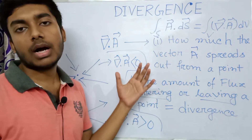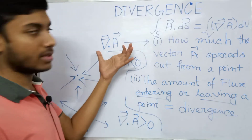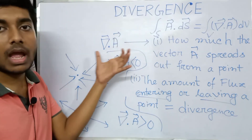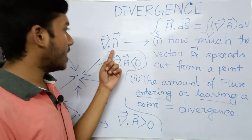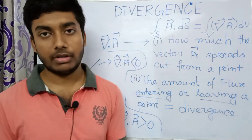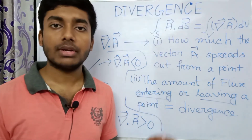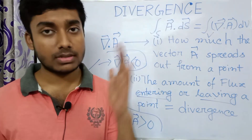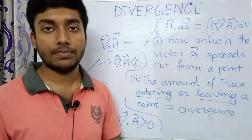Now I will make some mathematical calculations to understand the significance of del dot A more clearly, and I will derive the expression for divergence. Please watch the video till the end because this part is also very important to understand the whole concept clearly.